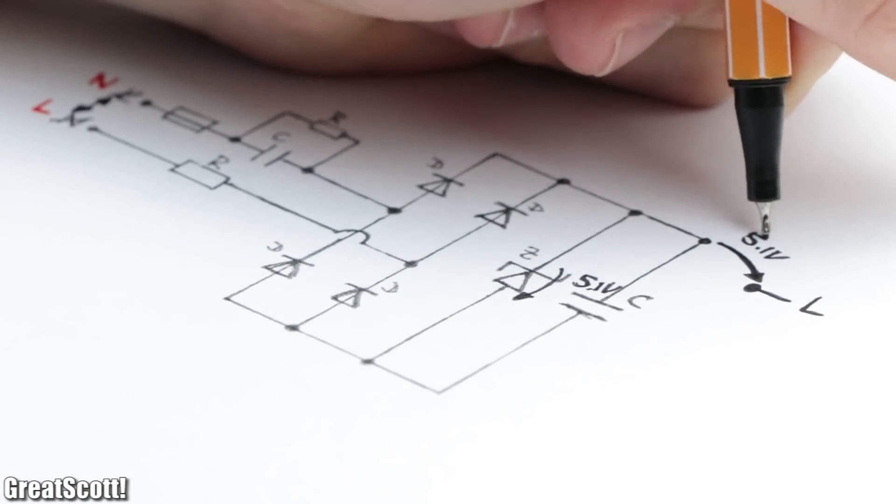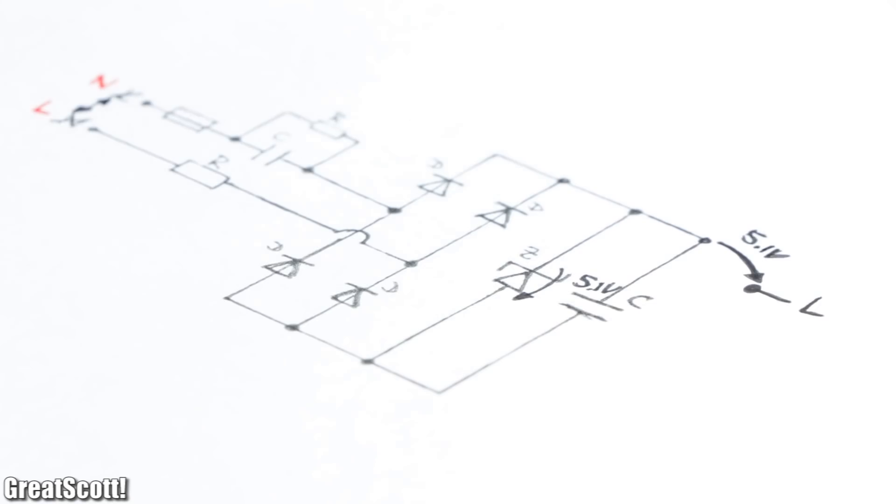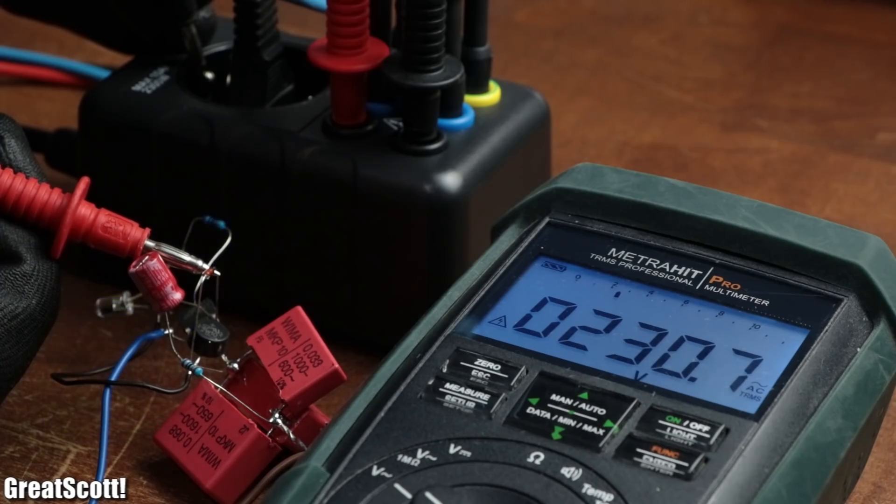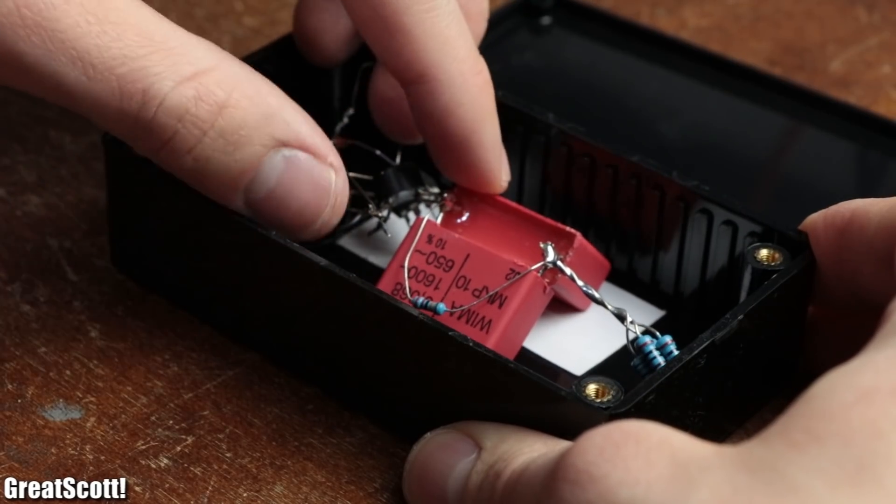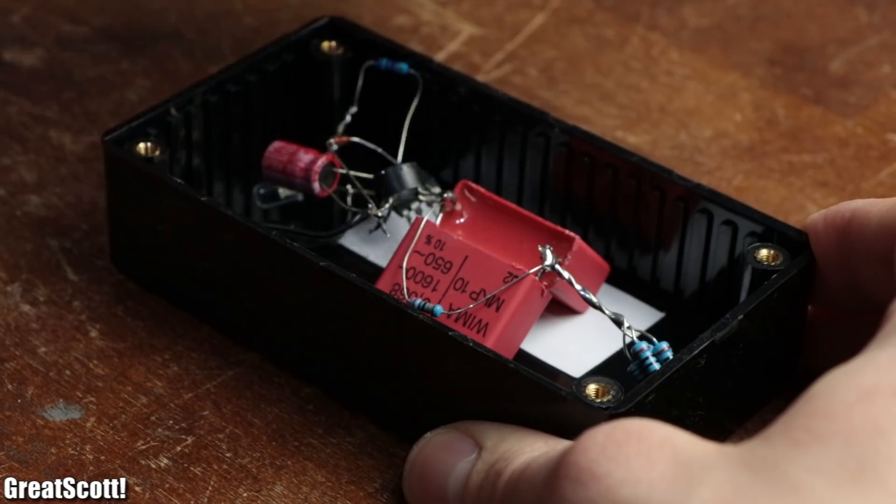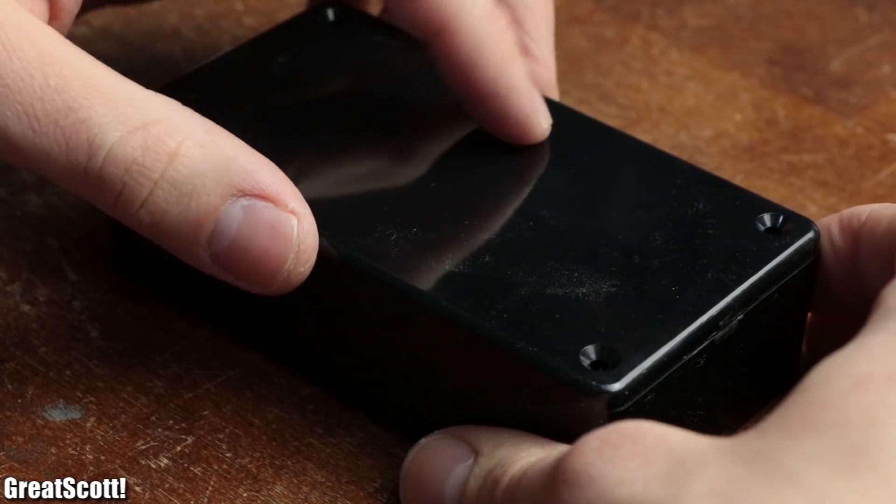We now have 5.1 volts referenced to the live wire, which can lead to fatal injuries if touched. That is why capacitive dropper power supplies are super dangerous and should always be positioned inside a closed housing.